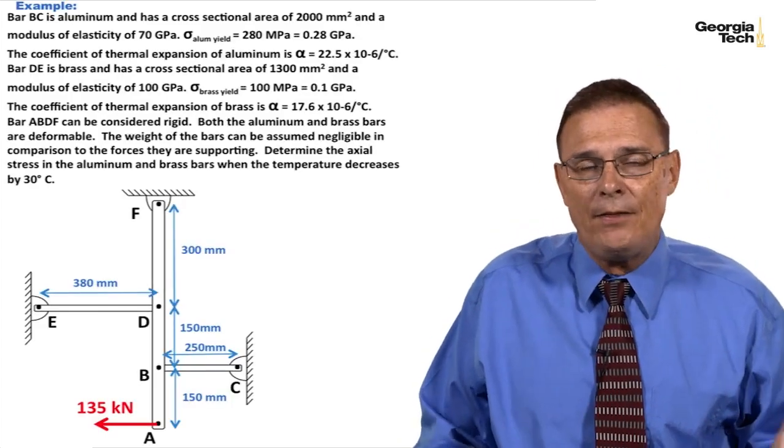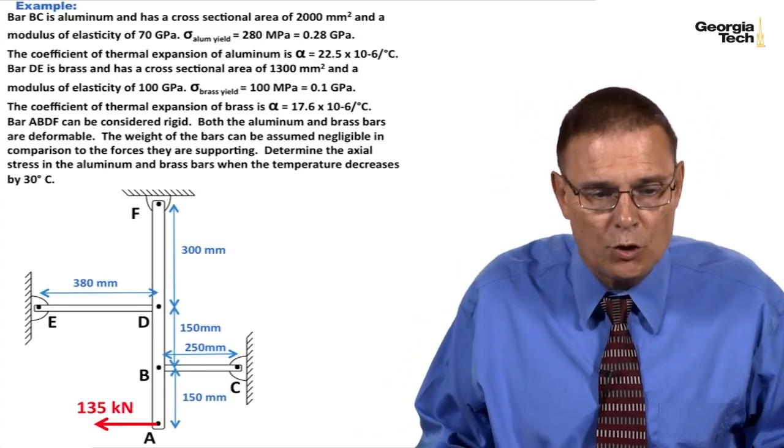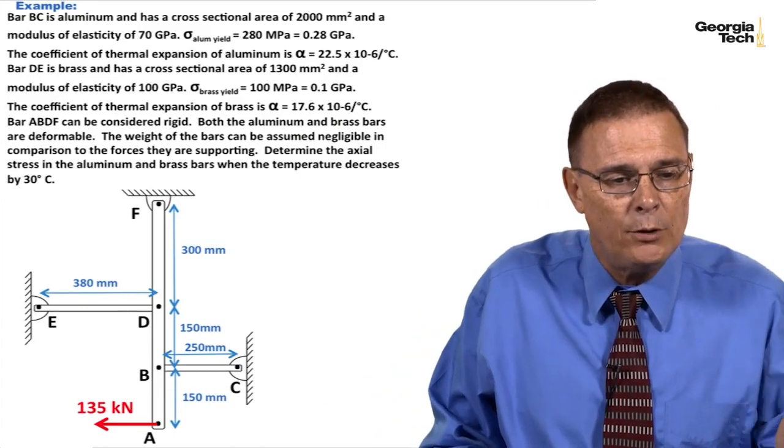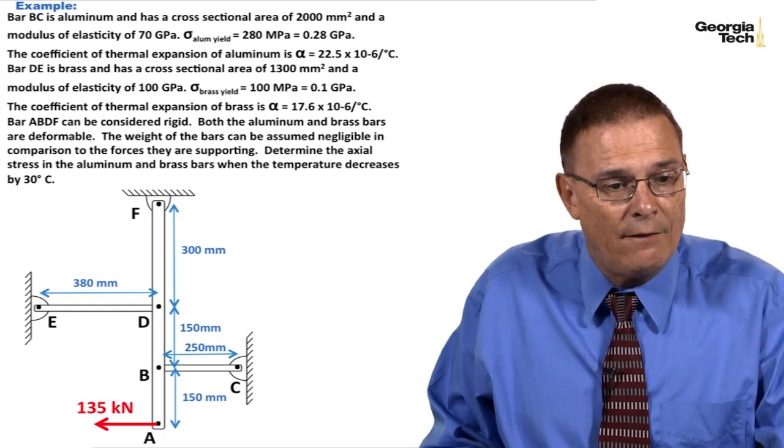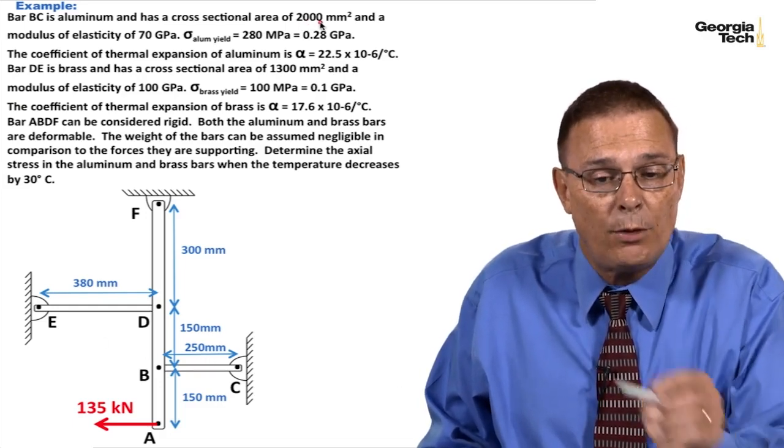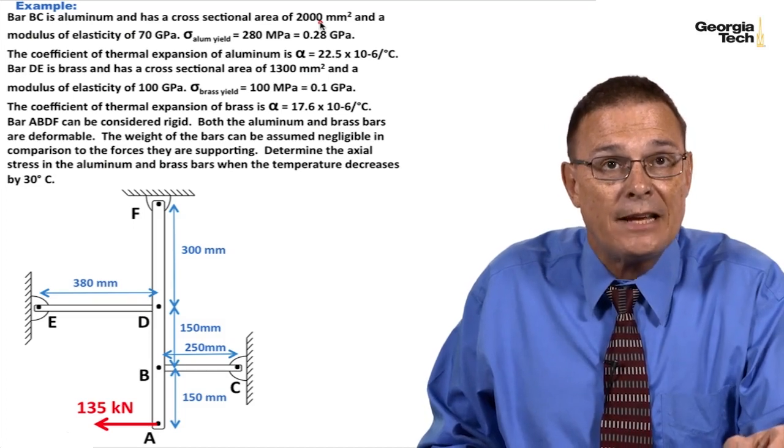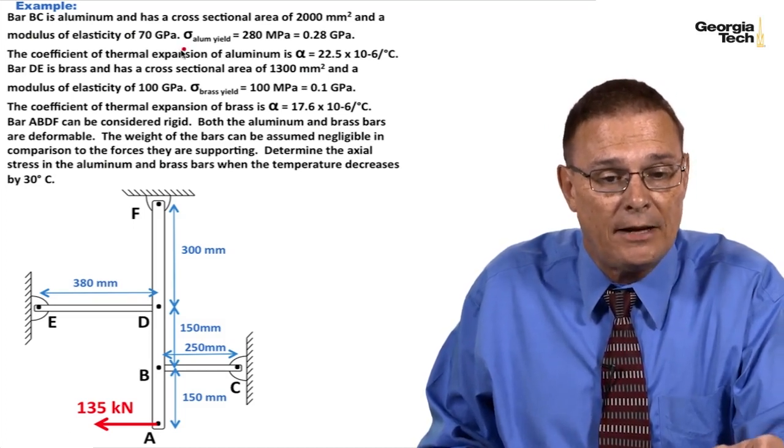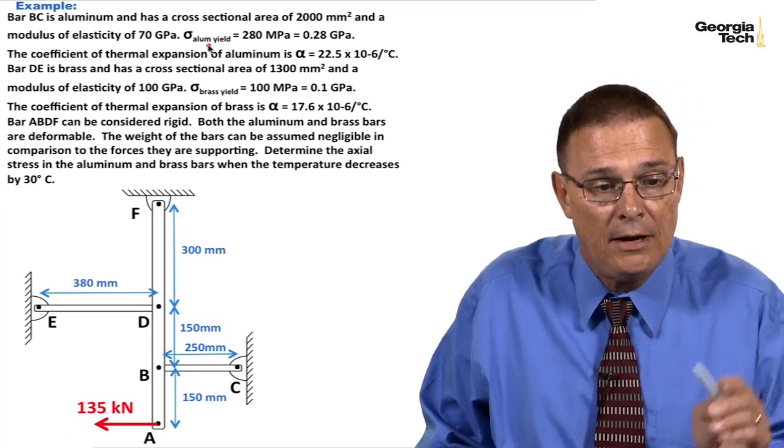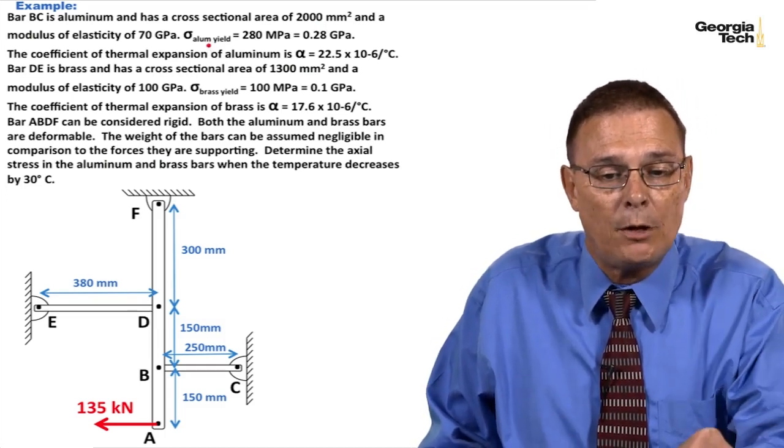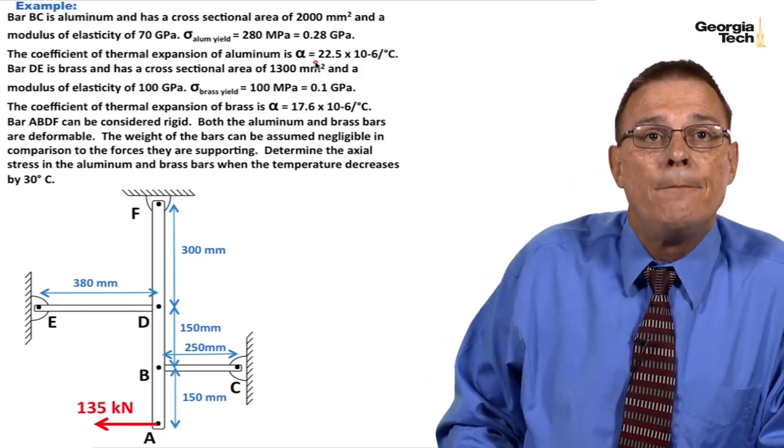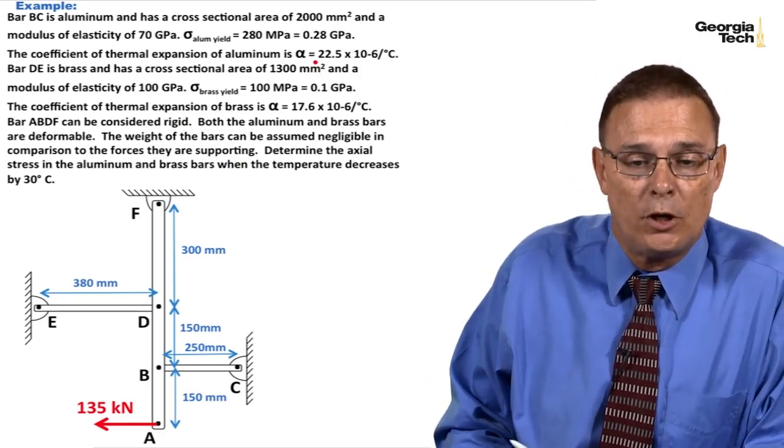Here's our example. This is going to be a little bit longer module than usual because I want to go through the entire problem so that there's continuity. Bar BC is aluminum with a cross-sectional area of 2,000 mm², modulus of elasticity of 70 GPa, and yield stress of 0.28 GPa. The coefficient of thermal expansion for aluminum is 22.5 × 10⁻⁶ per degree Celsius.